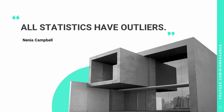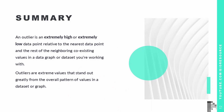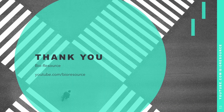A fitting quote for this context: "All statistics have outliers" — Nina Campbell. In summary, outliers are values within a dataset that vary greatly from other data points. There are two types: univariate and multivariate. They fall into three categories: global, contextual, and collective outliers. Causes include human error, intentional error, sampling error, data processing error, measurement error, experimental error, and natural outliers. Detection methods include sorting, graphing, IQR calculation, hypothesis testing, and z-score calculation.